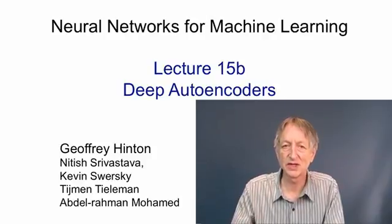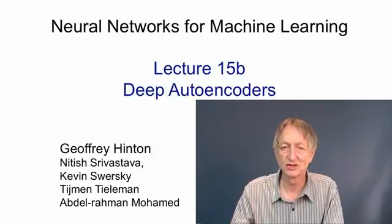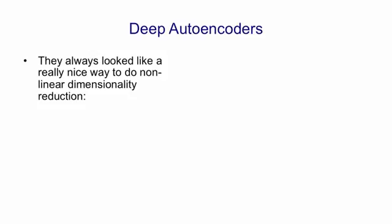After we developed methods of pre-training deep networks one layer at a time, Russ Salakhutdinov and I applied these methods to pre-training deep autoencoders, and for the first time we got much better representations out of deep autoencoders than we could get from principal components analysis. Deep autoencoders always seemed like a really nice way to do dimensionality reduction, because it seemed like they should work much better than principal components analysis.